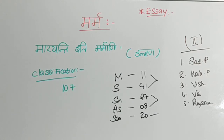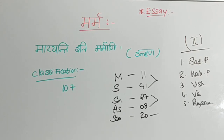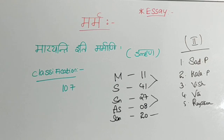If you read this shloka — Marmani Jeeva Adharani Prayena Munayohu Jaguhu — it means Marma is a place which is a seat of life, as said by Sharangadara. Now, moving to classifications. There were many classifications, and from the examination point of view, two types of classifications will be most asked. I will provide mnemonics in the coming sessions regarding the other types of classifications.